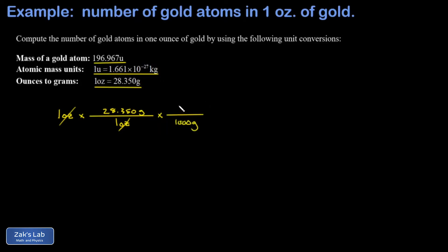in the denominator there for every one kilogram and the grams cancel out. Then I ask how many atomic mass units is that, so I need to convert my kilograms. I'm going to put that in the denominator: 1.661 times 10 to the negative 27 kilograms for every one atomic mass unit.